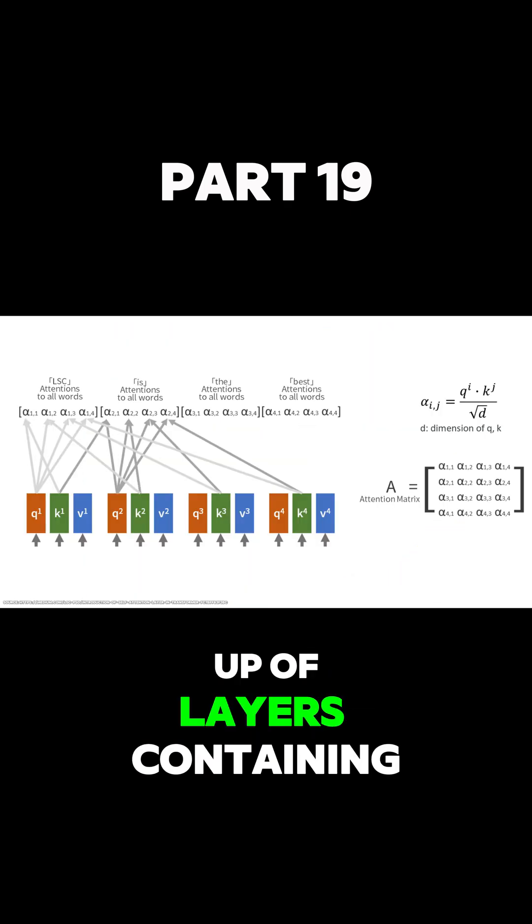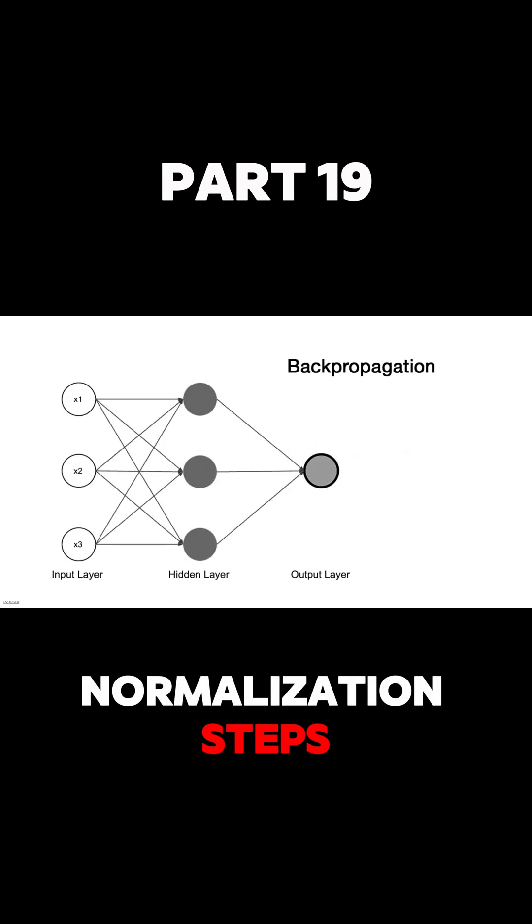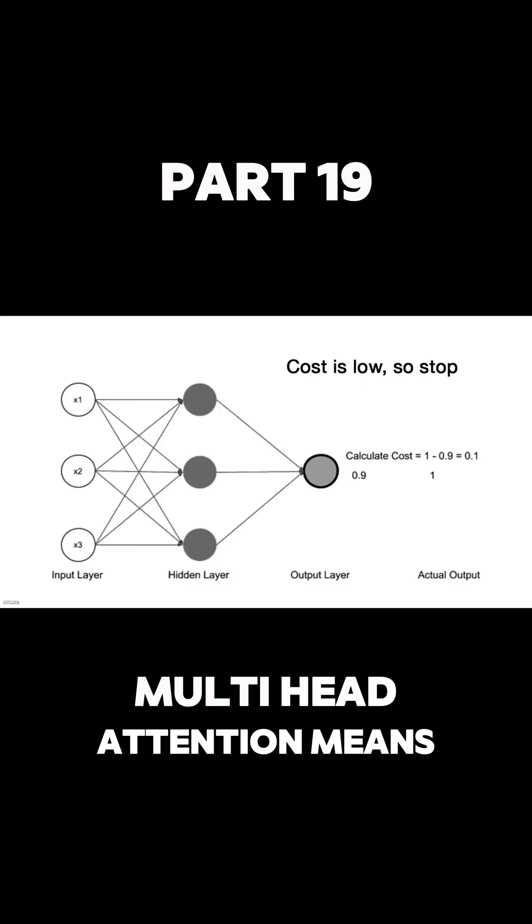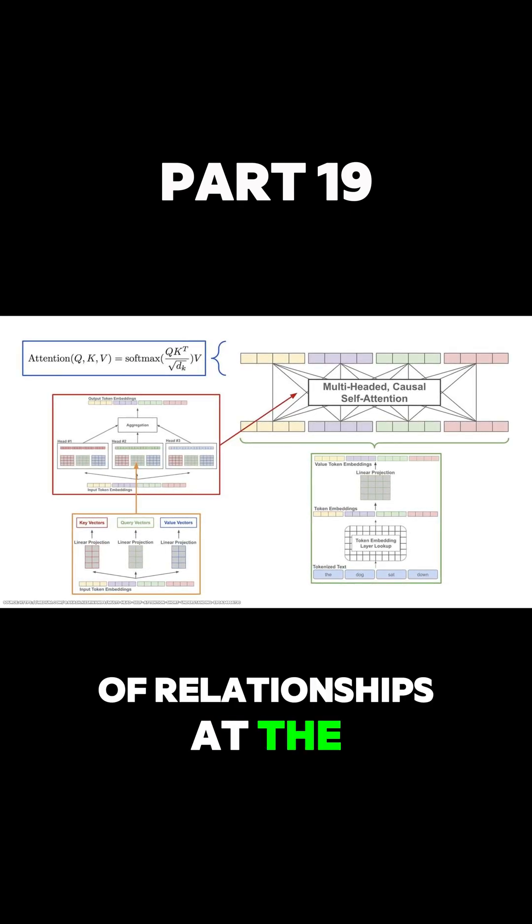The transformer is made up of layers containing multi-head self-attention, feed forward networks, and normalization steps. Multi-head attention means that the model can focus on different types of relationships at the same time.